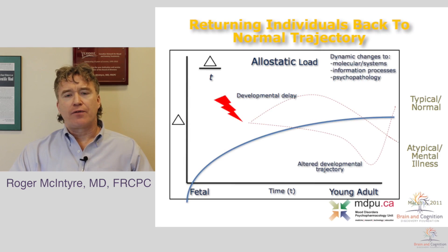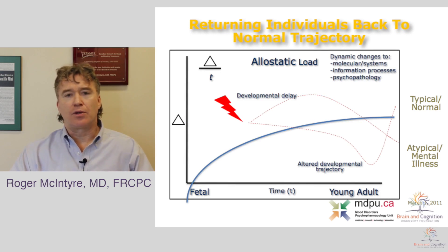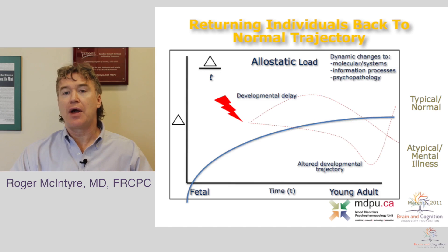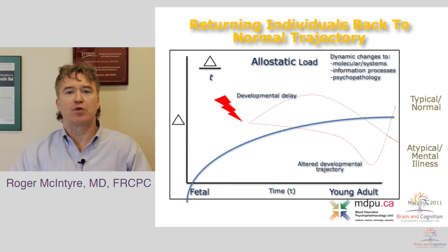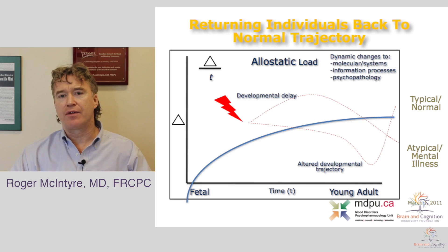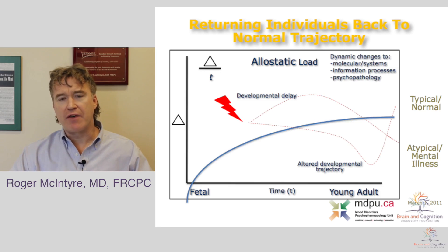I'd like to start with a conceptual framework. Mood disorders, like many other mental or brain-based disorders, are characterized by both neurodevelopmental and neurodegenerative aspects. A very large percentage of people who have mental illness declare the disorder before the age of 25. In fact, 75% of all DSM-5 defined diagnostic entities are declaring themselves observably before the age of 25, major depressive disorder and bipolar disorder being two of those conditions.